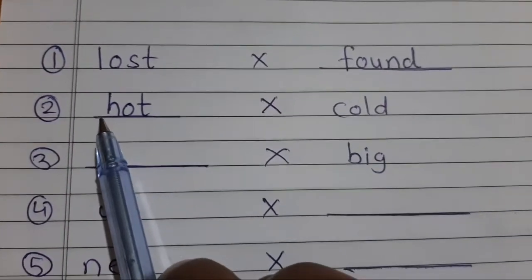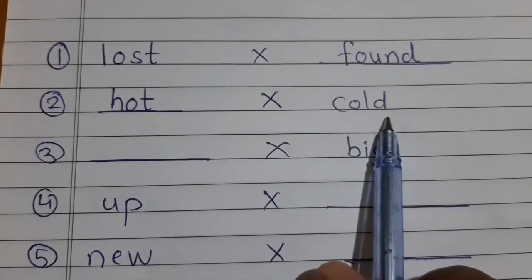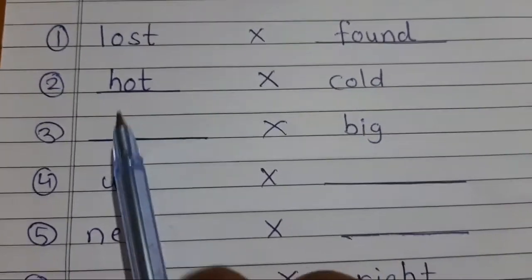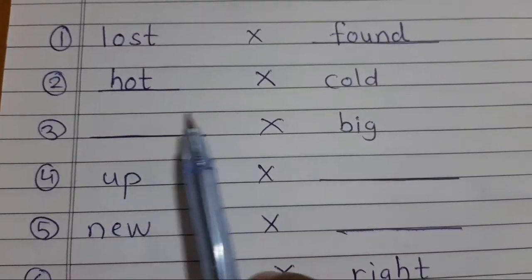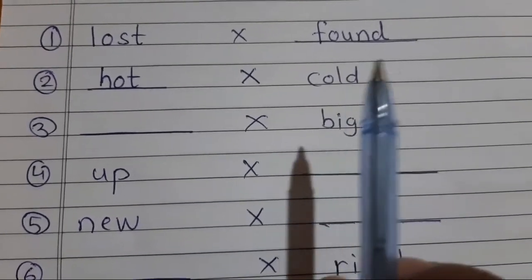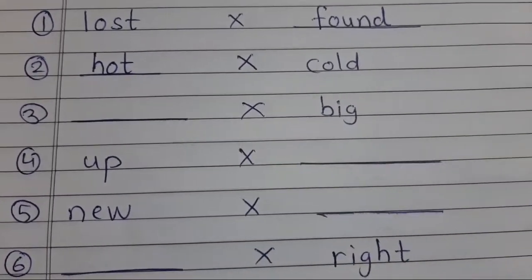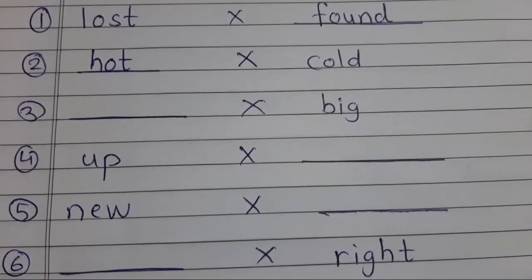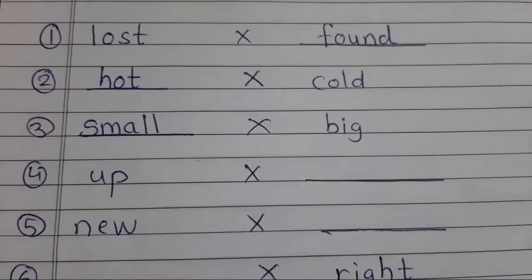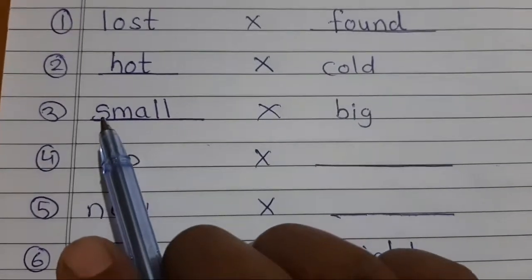Now next is dash opposite big. Big means bada. What is the opposite of big? Small. Write it down, S-M-A-L-L, small, small, small, opposite big. Big opposite small, chota bada.